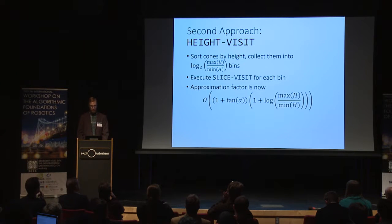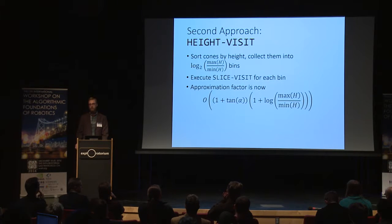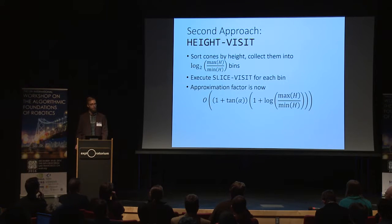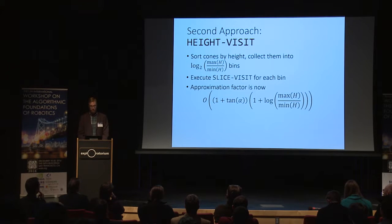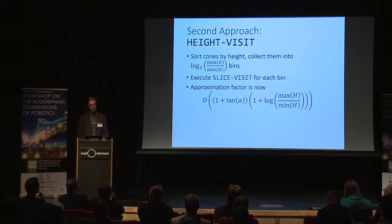The max-over-mean quantity squared can be very bad. So for our second approach, we first sort the cones by height, collect them into a logarithmic number of bins of doubling height, and then execute slice visit separately for each bin. By doing this, we obtain an approximation factor that looks the same as the previous one, but now instead of maximum over mean quantity squared, we have logarithm of max divided by min, which is usually quite a bit better.